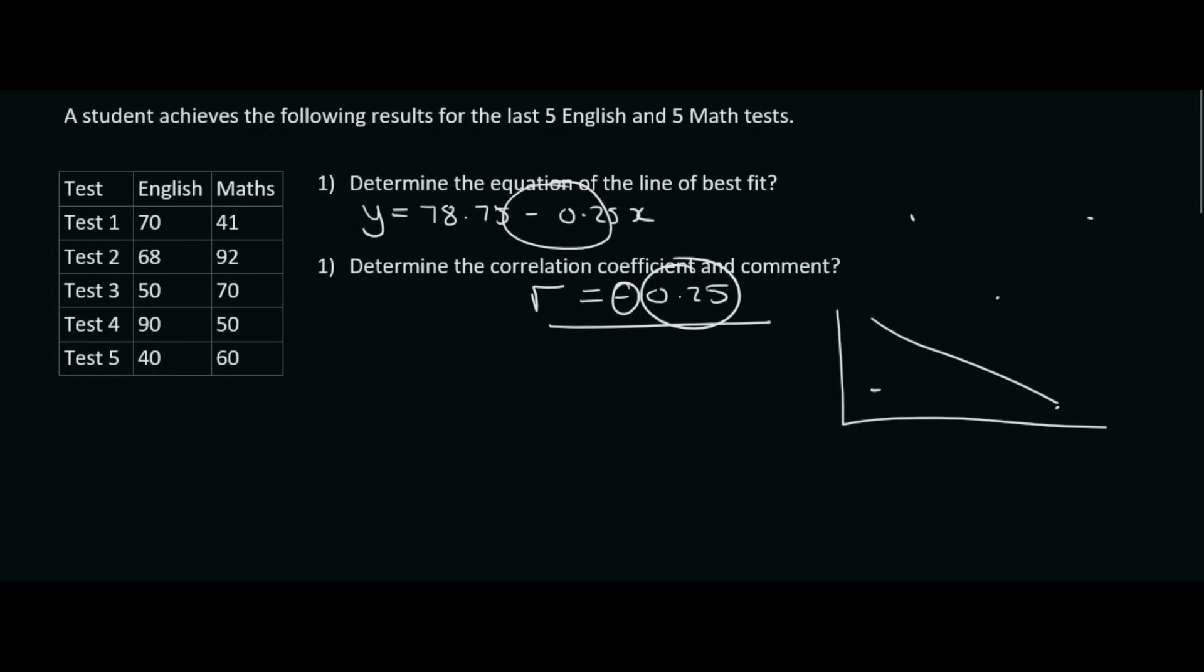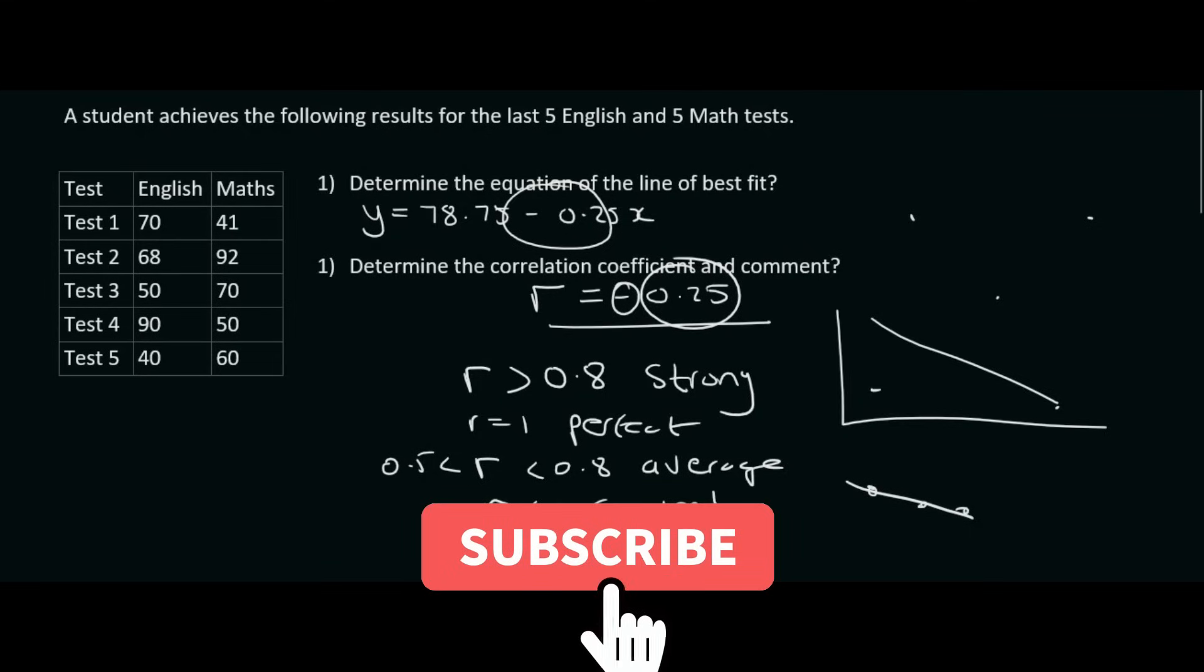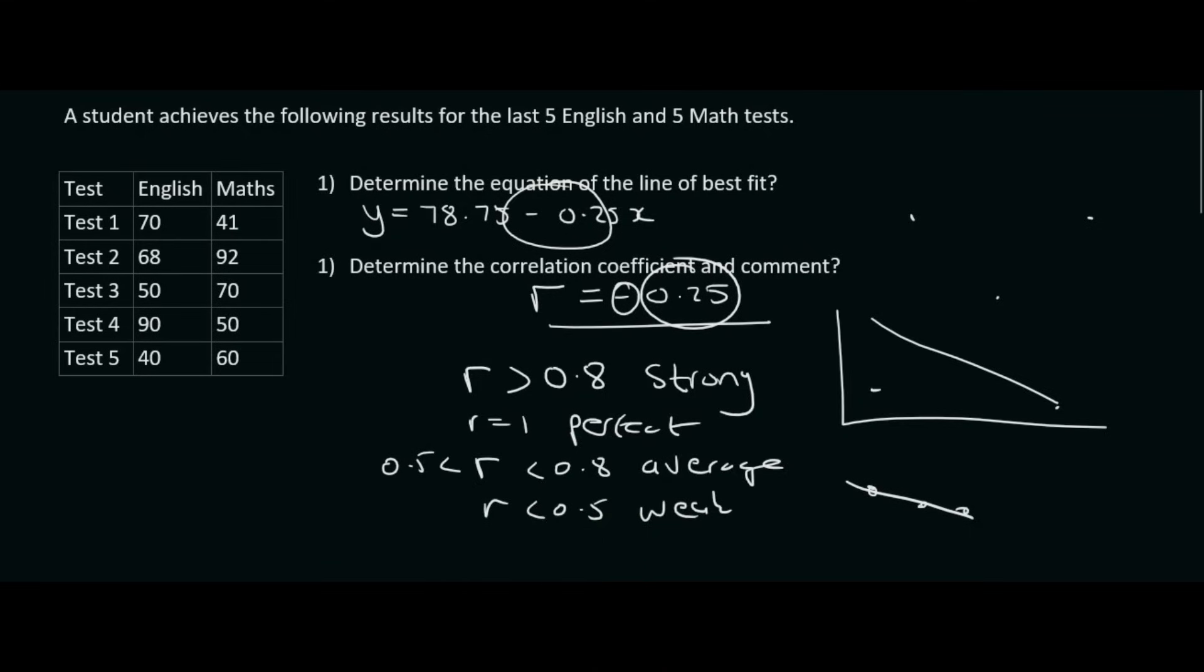Remember in the previous video we said that anything above 0.8 is strong. If it's equal to 1, that's perfect. That's a line that literally the dots are on the line. Then anything between 0.5 and 0.8 is an average correlation. And then anything less than 0.5 is weak. That means the line doesn't match the dots at all. And then the same holds for the negatives. The negatives just mean the line's going downwards. So negative 0.25 is very, very weak.